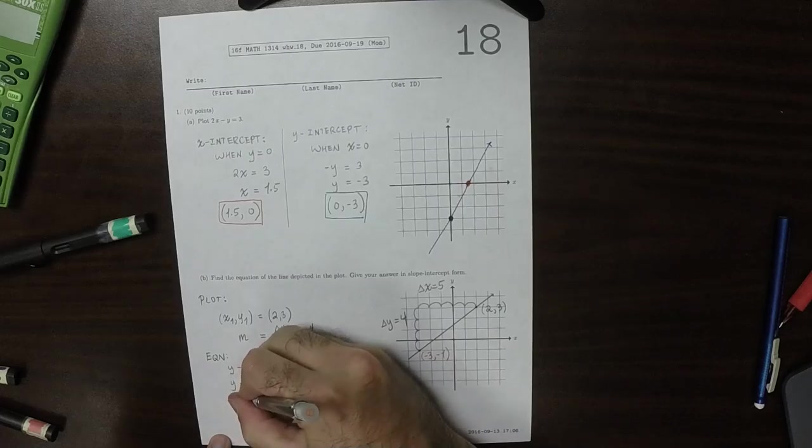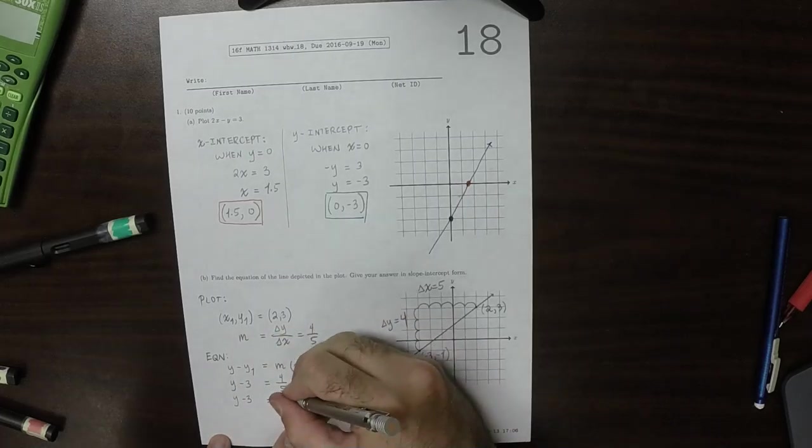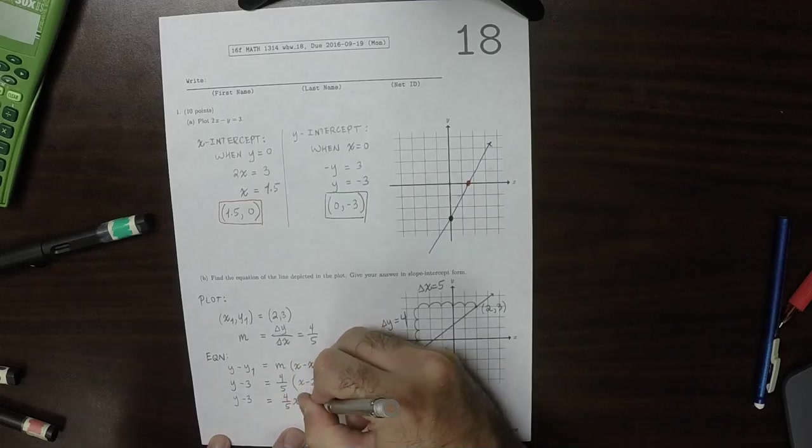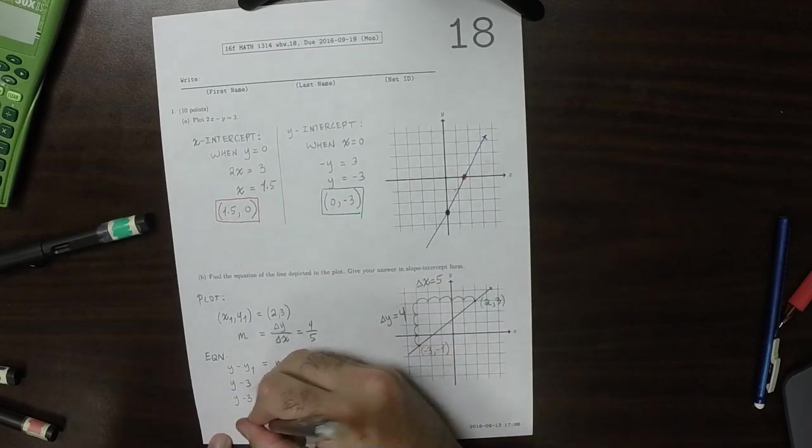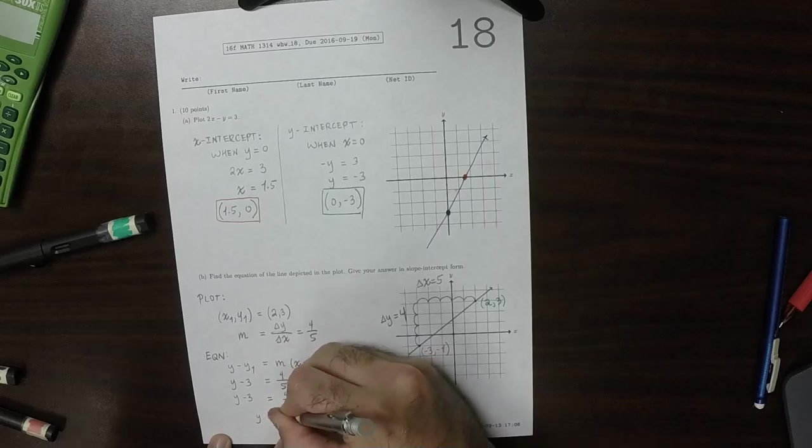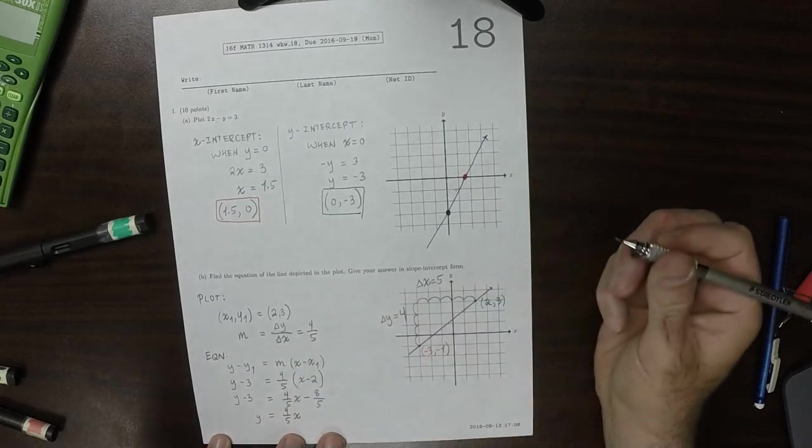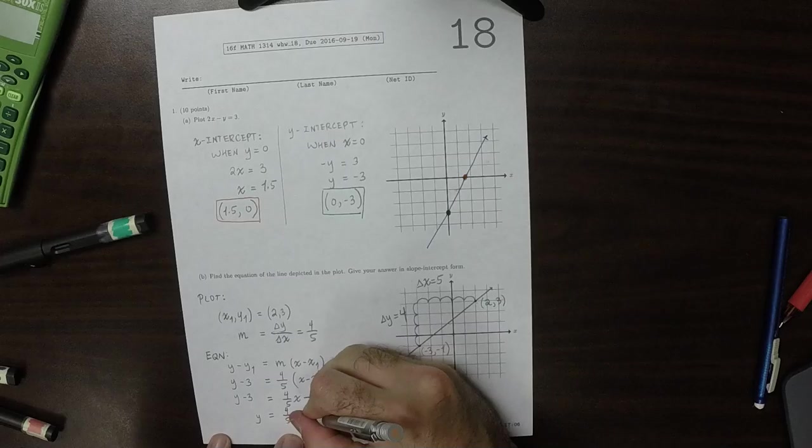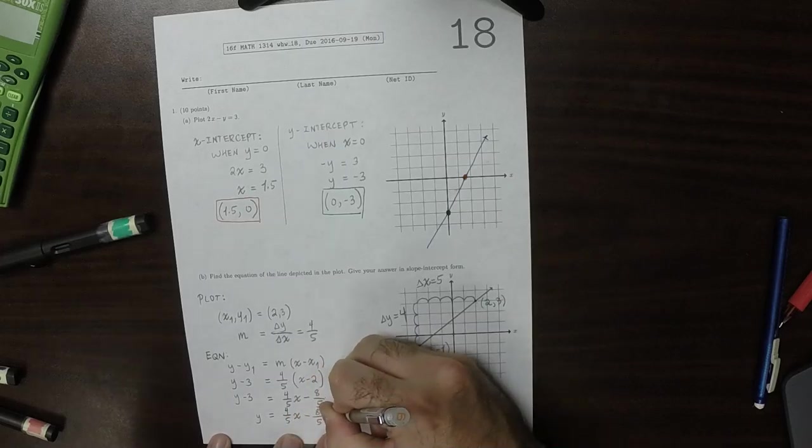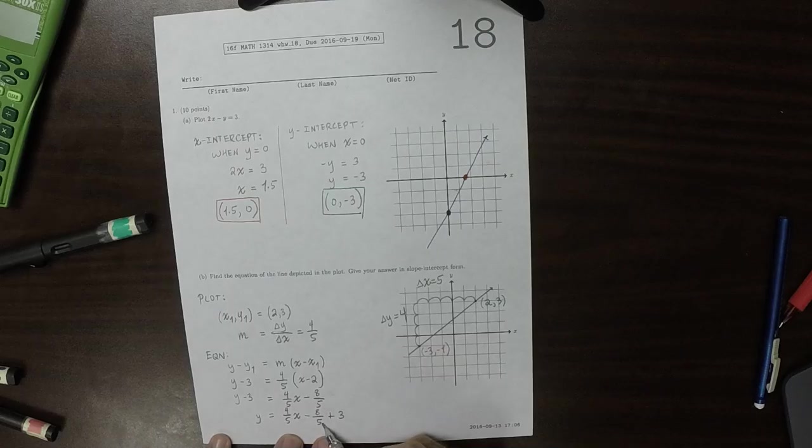So that would be y minus 3 is 4 fifths x minus 8 fifths. So y is 4 fifths x minus 8 fifths plus 3. Well, this is 8 fifths and 3 is 15 fifths.